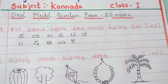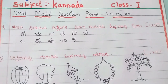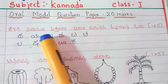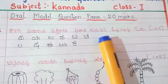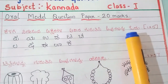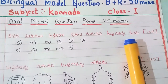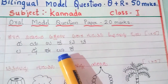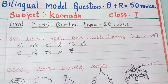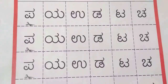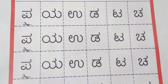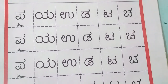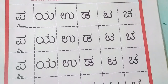This is related to oral questions. Question number 1: children have to identify the alphabet and read them. You can find the letters here. The child has to identify the shapes of the letters and name them.